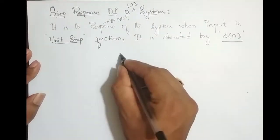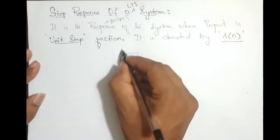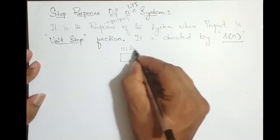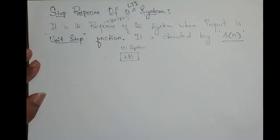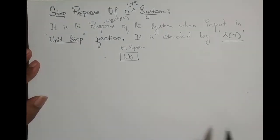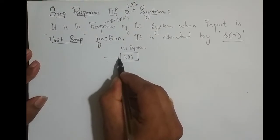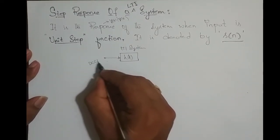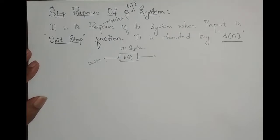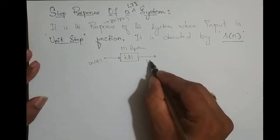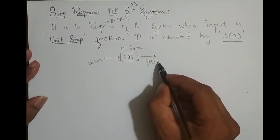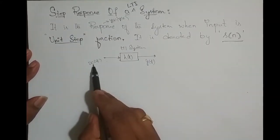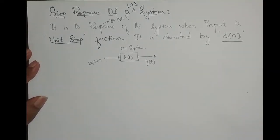Consider we have an LTI system with an impulse response h(t) for a continuous time system. The input is x(t) and the output is y(t). For an LTI system, y(t) is the convolution of the input signal x(t) with the impulse response h(t).